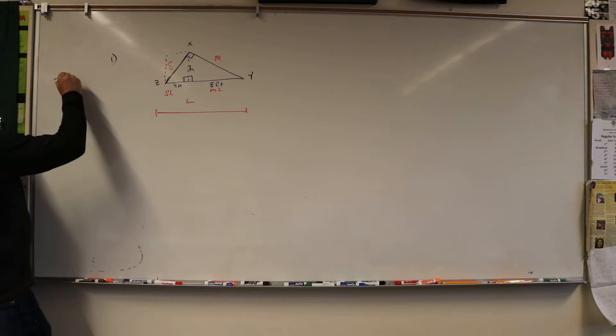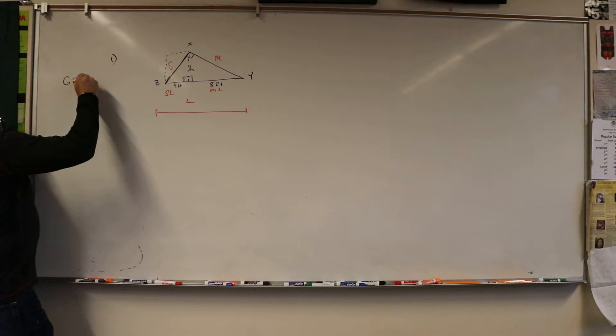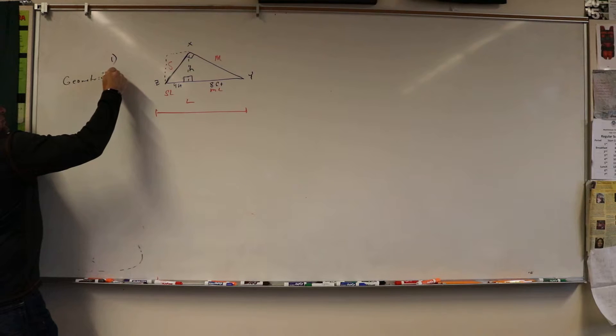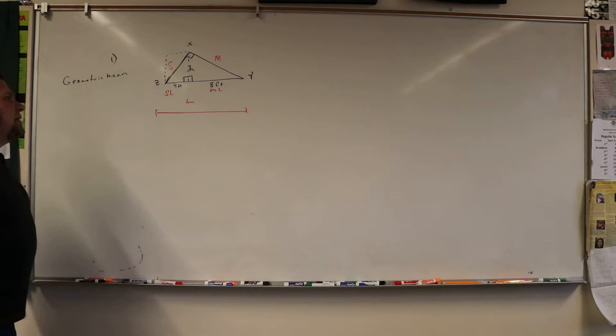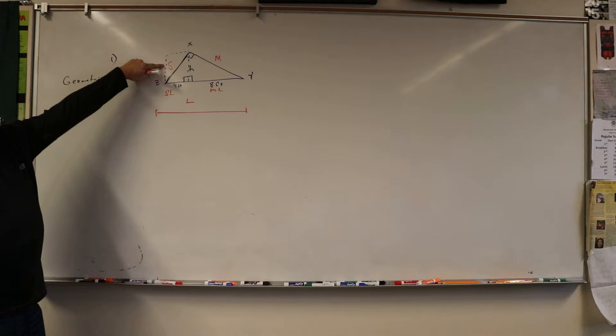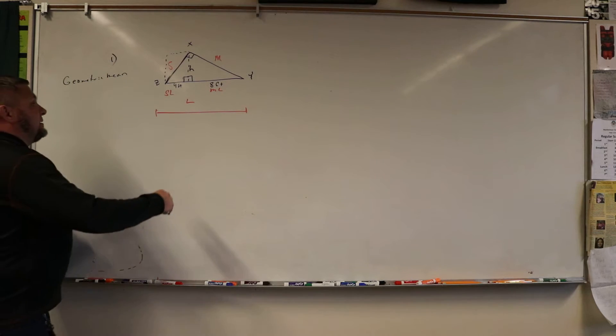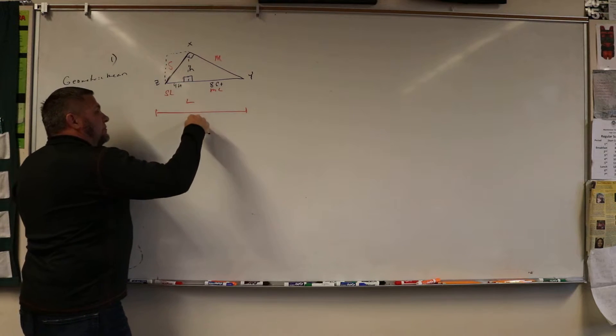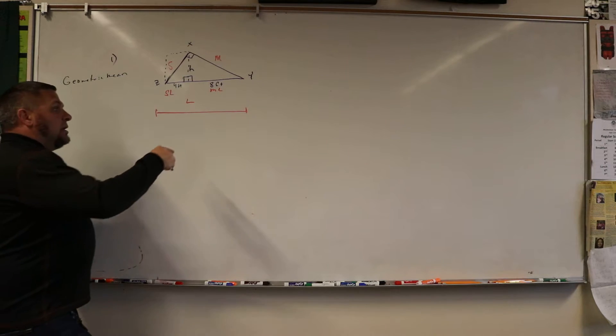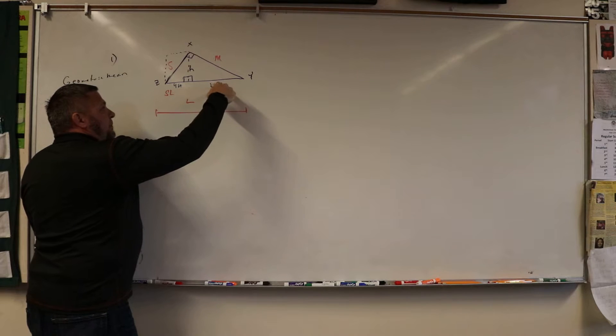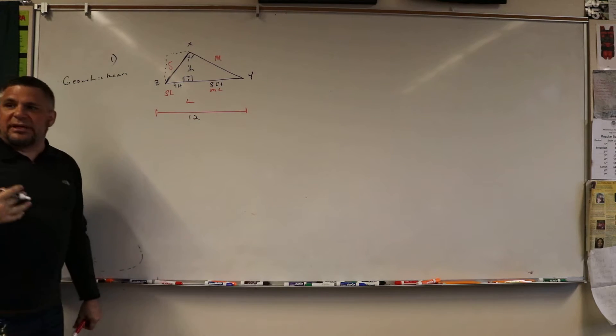As long as this is a right triangle, we can use what's called a geometric mean. When we did the geometric mean, it means you multiply two things and take the square root of it. The geometric mean of this small side is the small side times the large side. The large side here is going to be 4 plus 8 which is 12.